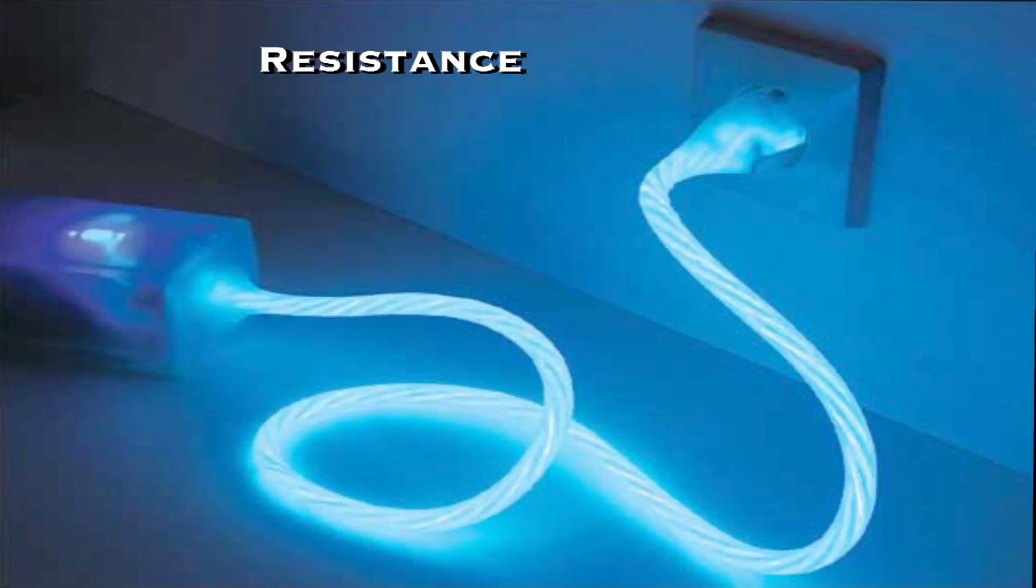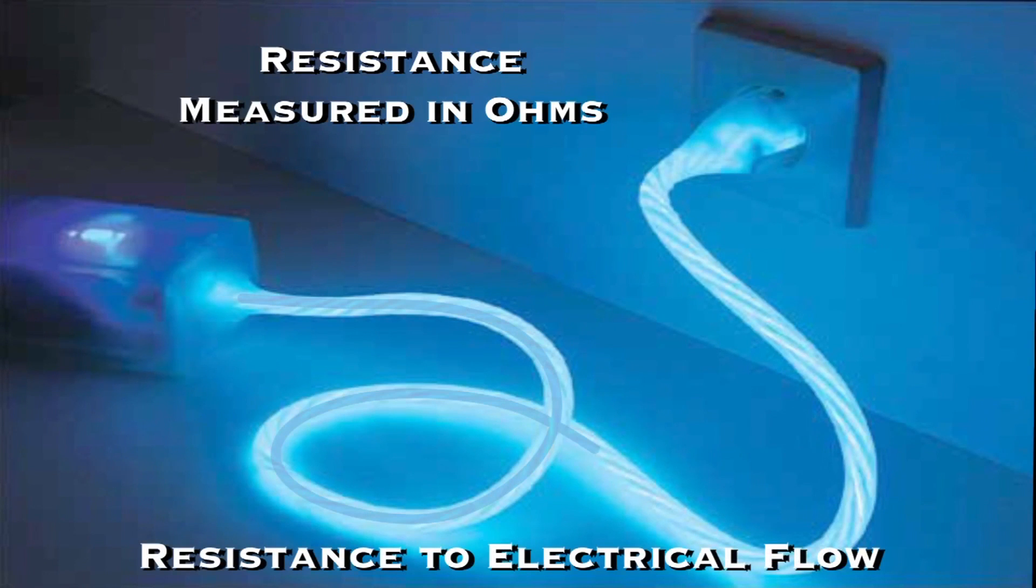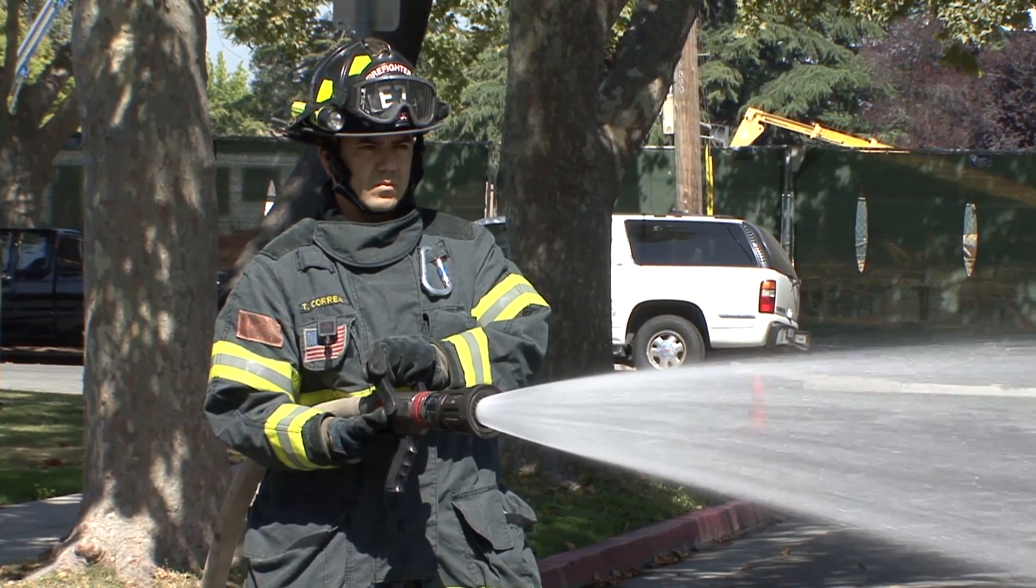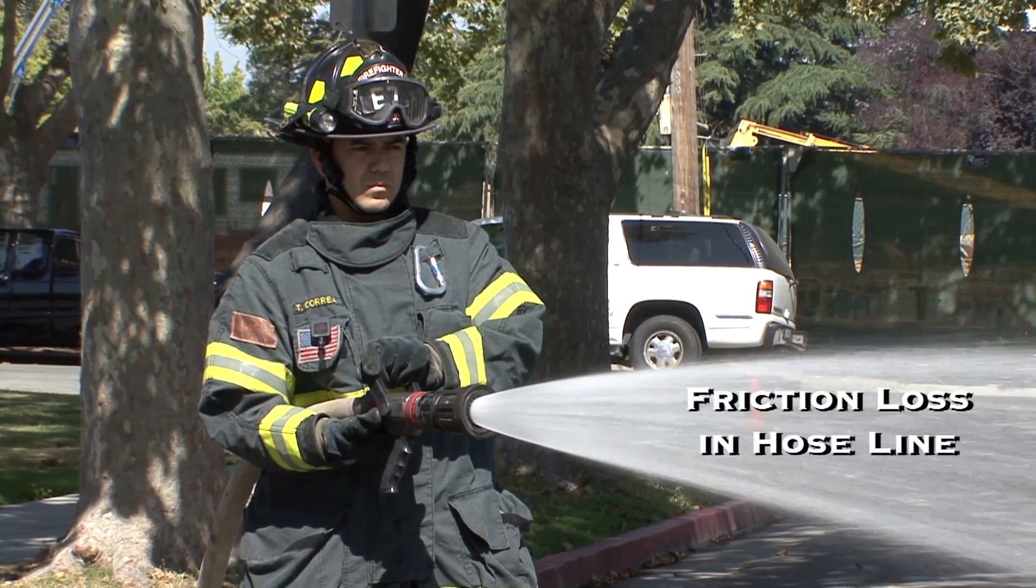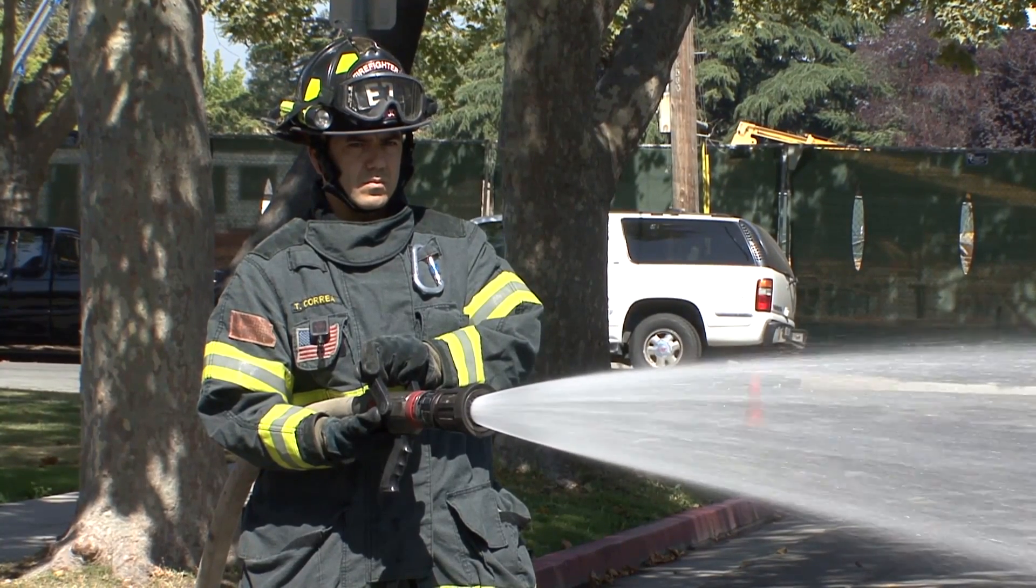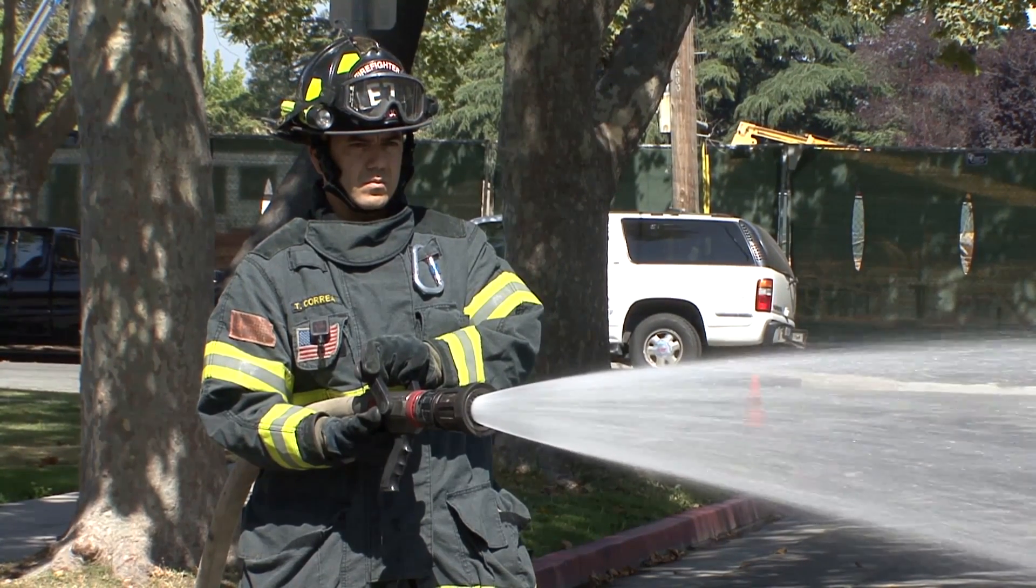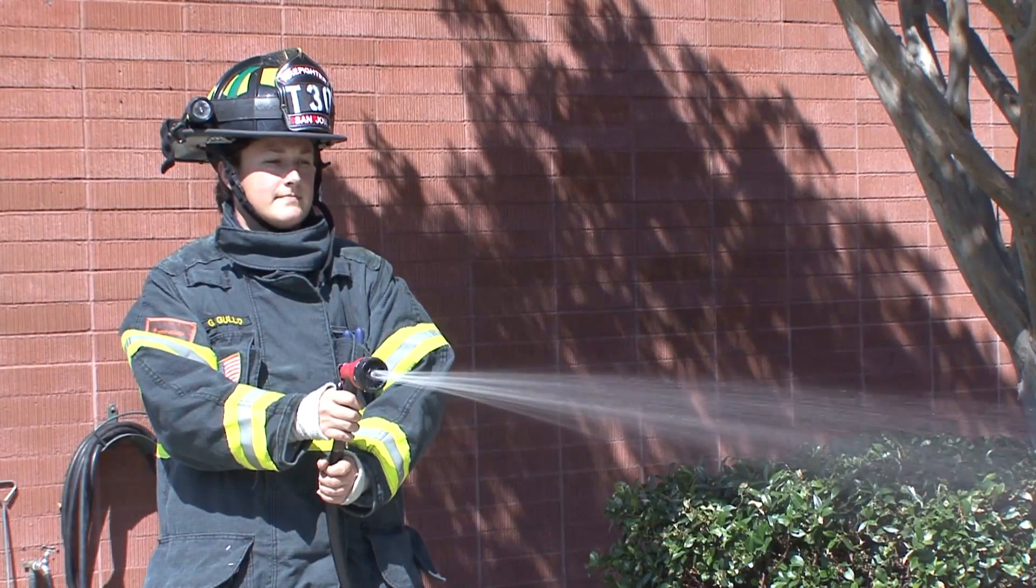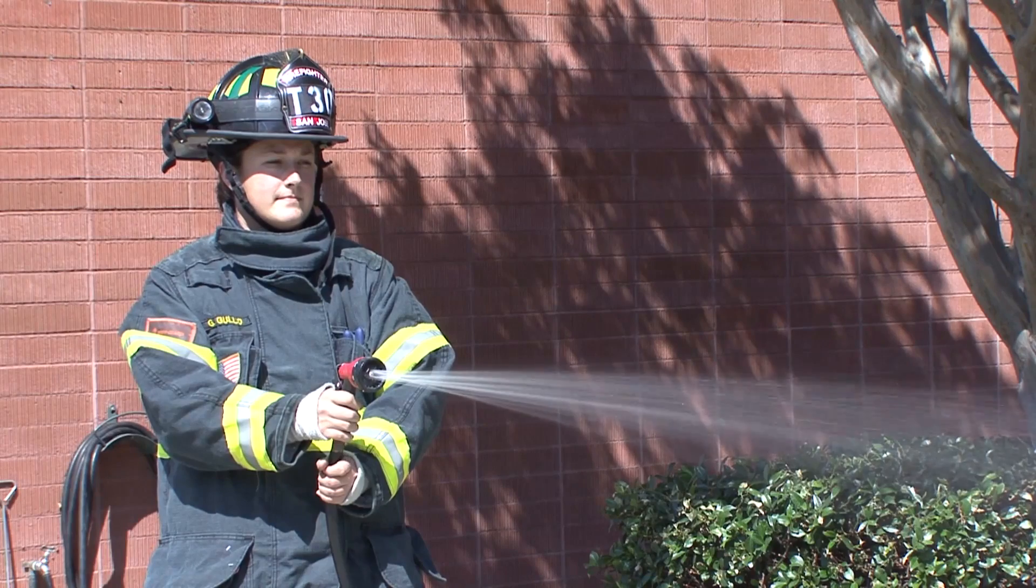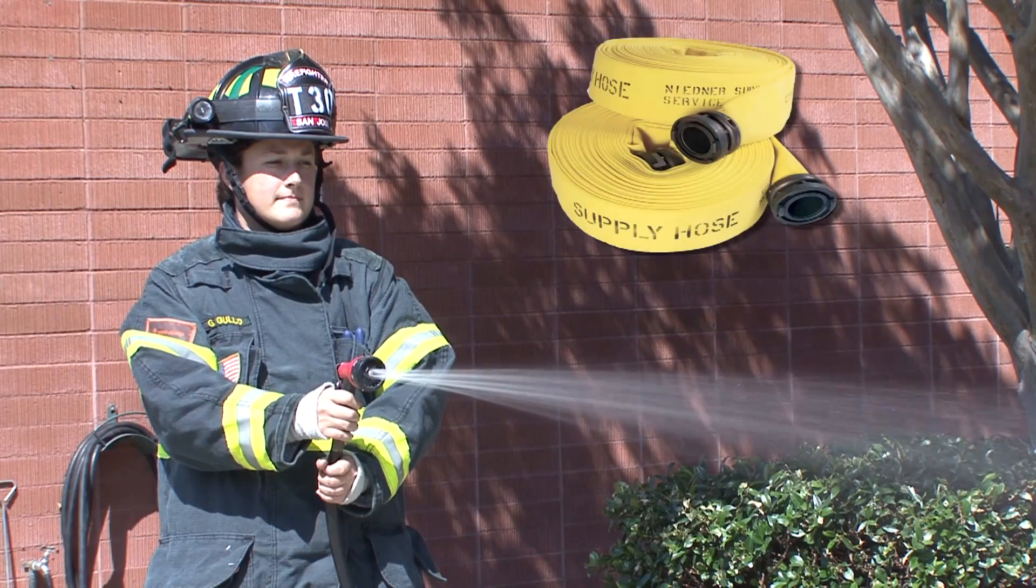The last one is resistance. Resistance is measured in Ohms, and it refers to the resistance to electrical flow. In water terminology, we would look at that as the friction loss in the hose line. Here we have an inch and a half hose line. If we were to take the same amount of water and put it through a garden hose, you'd have much higher friction loss. Equally, if we put the same amount of water through a five inch hose, you'd have much less friction loss.